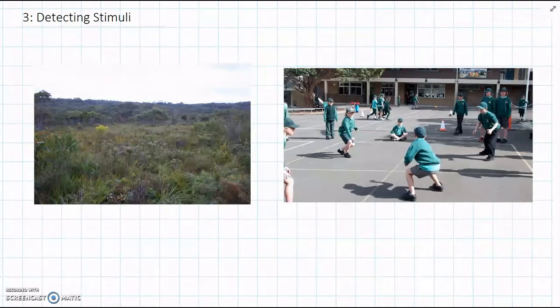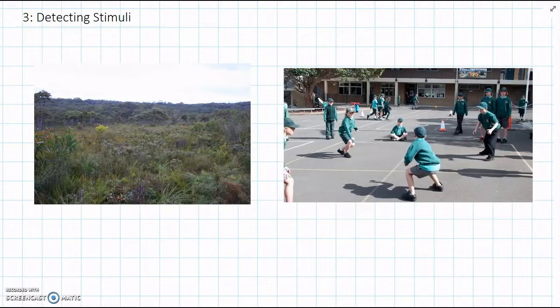Looking at these two pictures here, we have two different environments, and remember, an environment is just everything outside of an organism. We have a woodland in Australia with some small shrubs, and then we have an environment that's more familiar to all of us, which is the schoolyard.